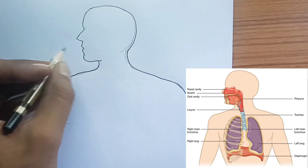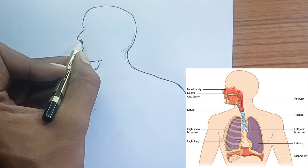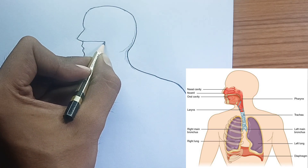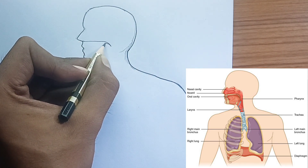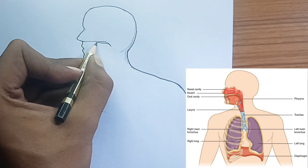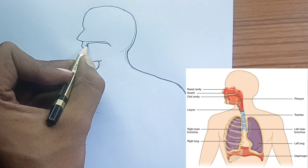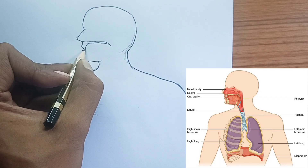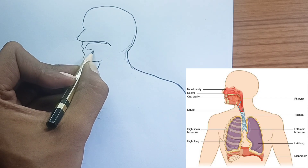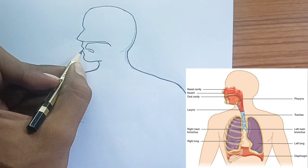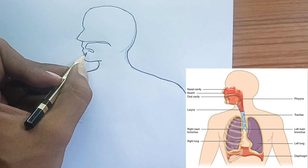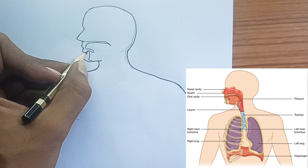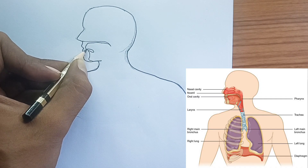Larynx — the voice box. Air travels through the larynx, which contains your vocal cords. As air passes over these cords, they vibrate to produce sound. A flap of tissue called the epiglottis sits above the larynx and prevents food from going down the wrong way into your airway when you swallow.